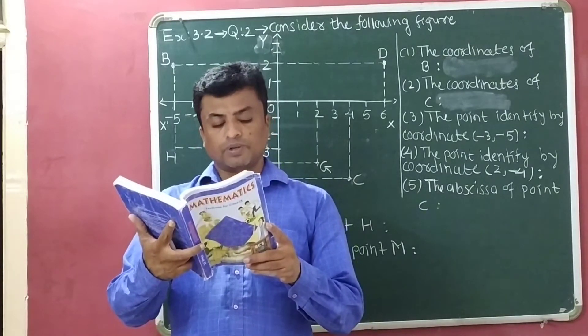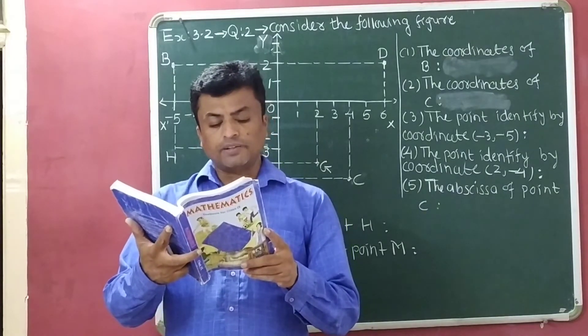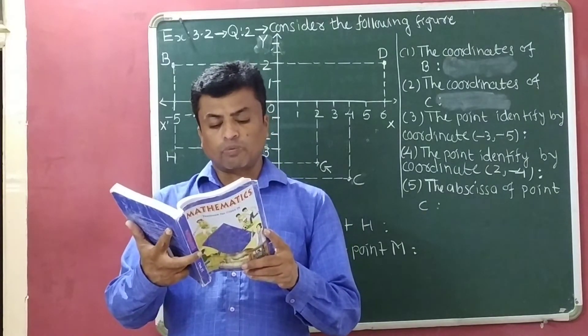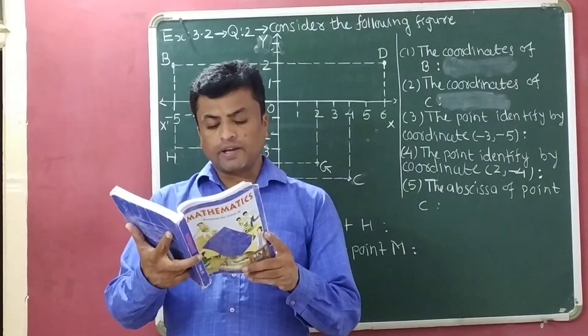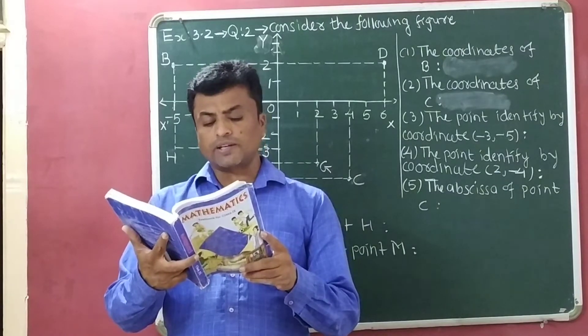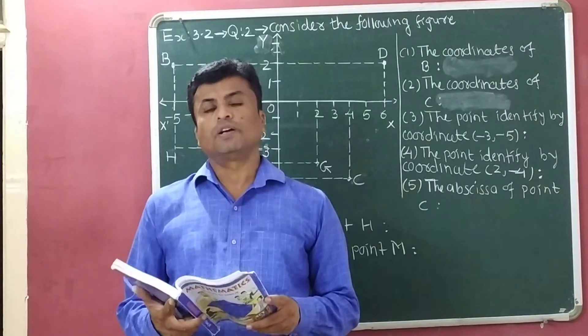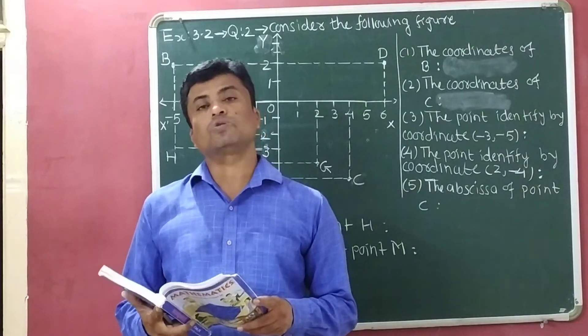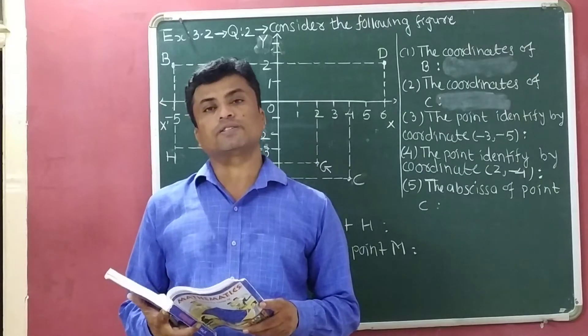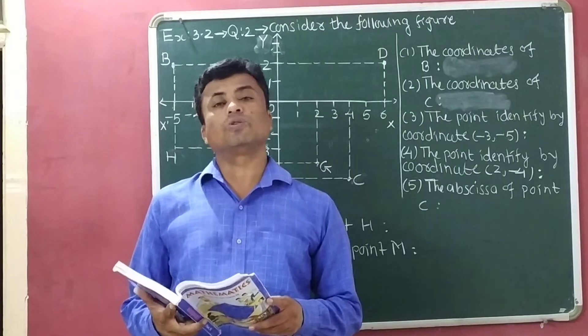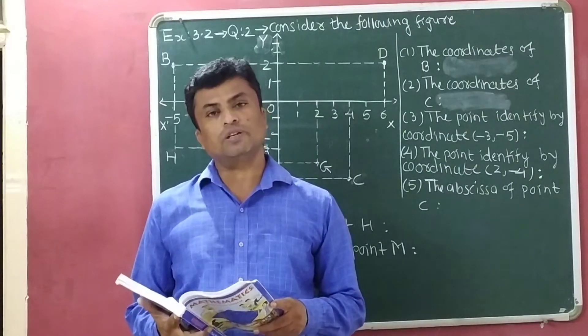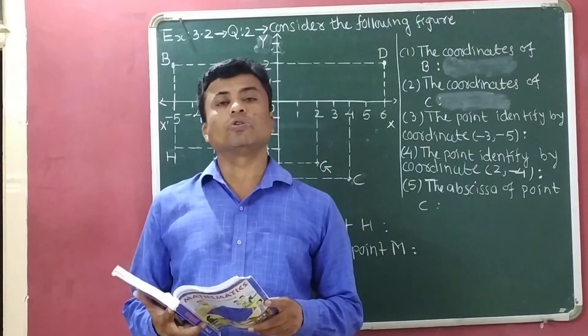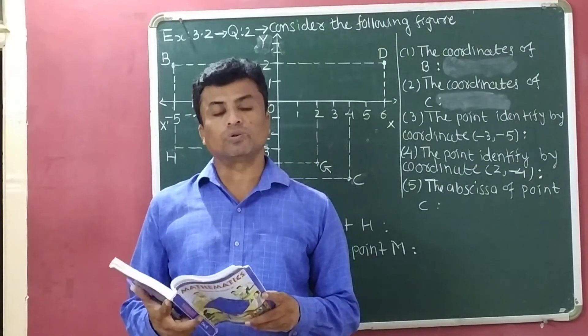Question number 3: Write the names of the point where these two lines intersect. The name of the point where these two lines intersect is known as origin and it is denoted by point O.